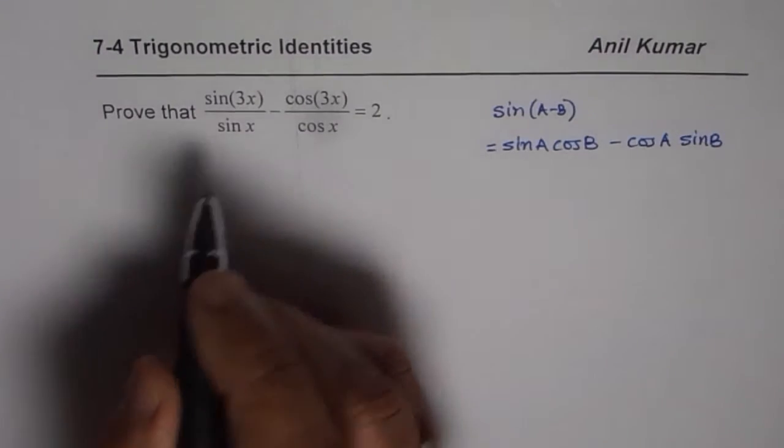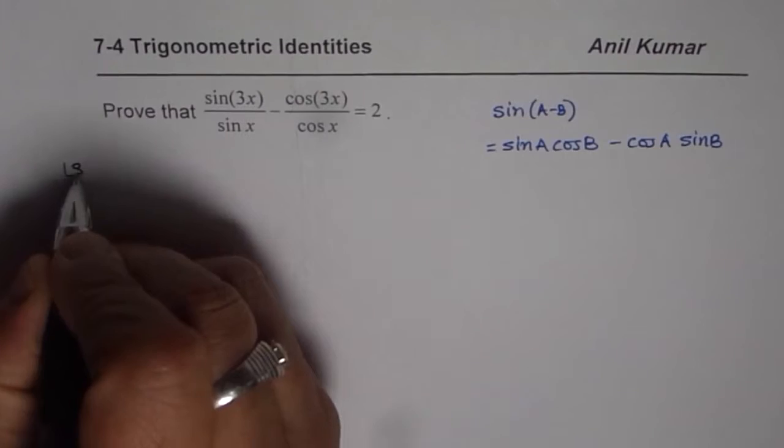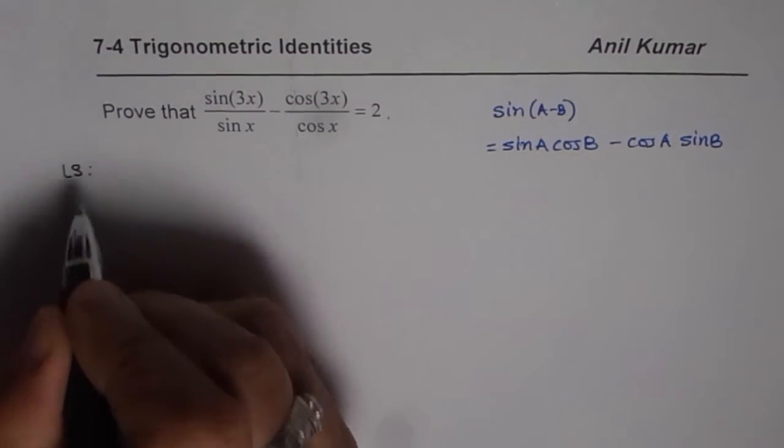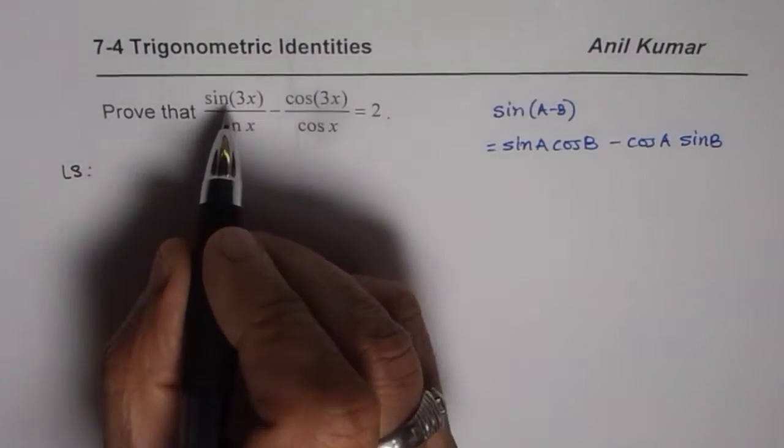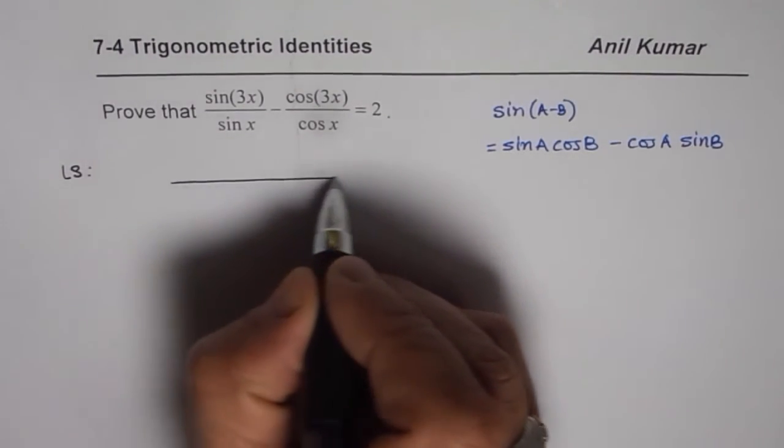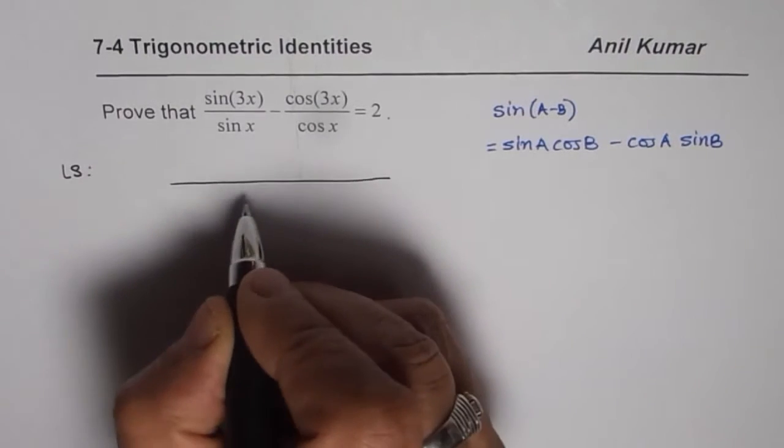Well, one way is, we will start with the left side. Since the right side is just the number 2, the left side we could write with a common denominator. What I will do here is, I will take sin(x)cos(x) as common denominator. So, I have sin(x) times cos(x). To get cos(x), I have to multiply both by cos(x) or cross multiply.